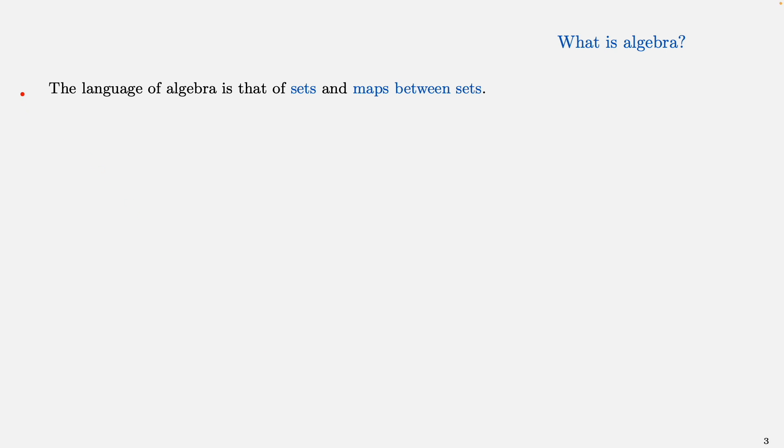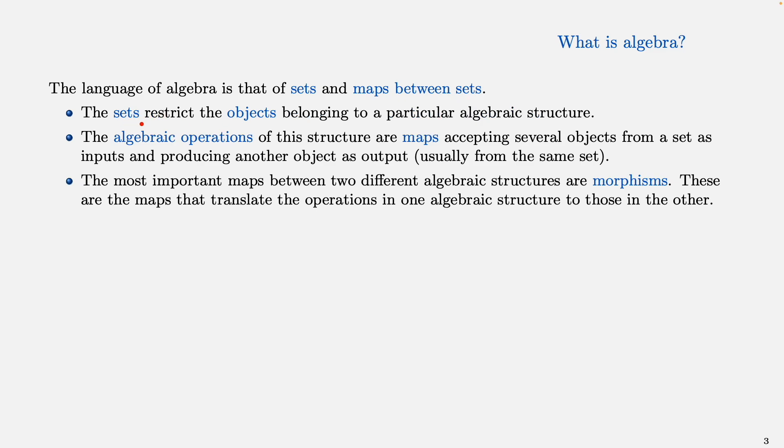The language of algebra is that of sets and maps between sets. The sets we're looking at restrict the objects belonging to a particular algebraic structure, for example a set of certain numbers. The algebraic operations of our algebraic structures are maps that accept as input several objects from a set and produce another object as output, usually from the same set but not always.